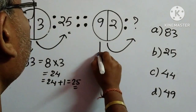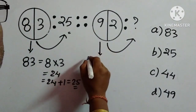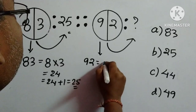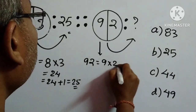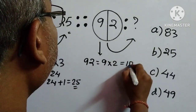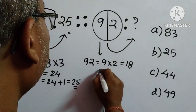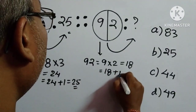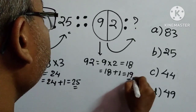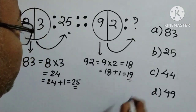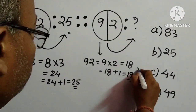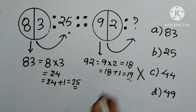We check whether the same process works for 9 and 2. We multiply the digits: 9 into 2 is 18. Then we add 1: 18 plus 1 is 19. But 19 is not given anywhere in the options, so we cannot follow this process.